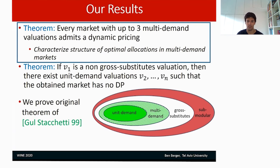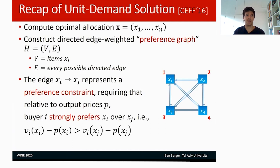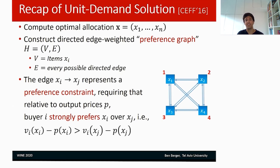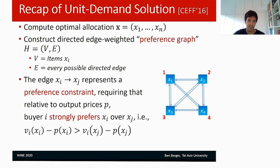Let me do a quick recap of the dynamic pricing solution for unit demand buyers by Cohen et al. First, they compute some optimal allocation X, X_1 to X_N, where X_i is the item allocated to buyer i. Then they construct a directed edge-weighted graph called the preference graph, in which the items are the vertices and there is a directed edge between every two vertices. Think of the edge from X_i to X_j as representing a preference constraint requiring that, once prices are output, buyer i will strongly prefer X_i over X_j — meaning the utility from X_i given prices P is greater than the utility from X_j.